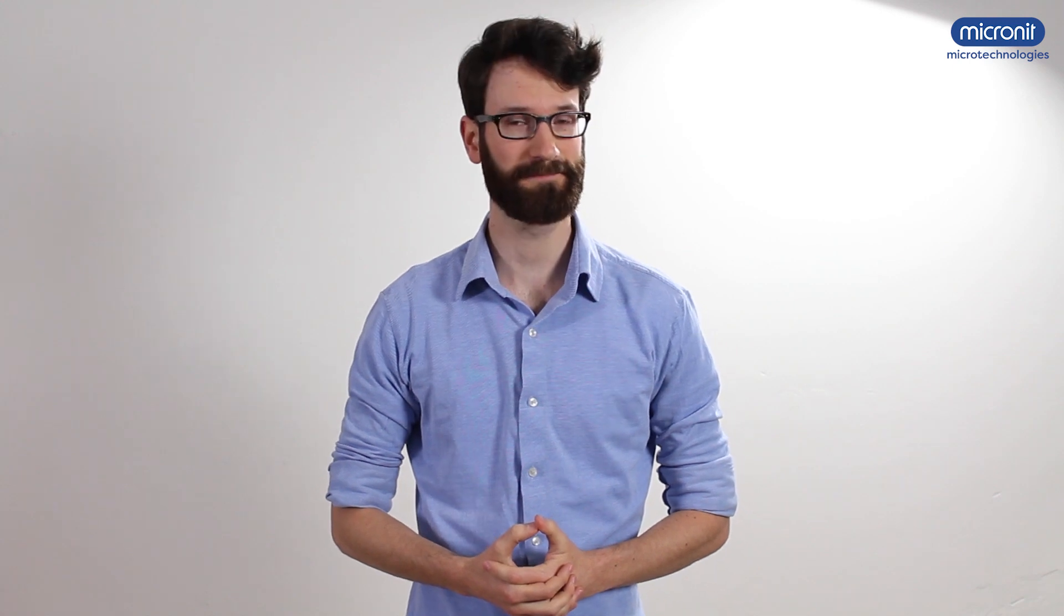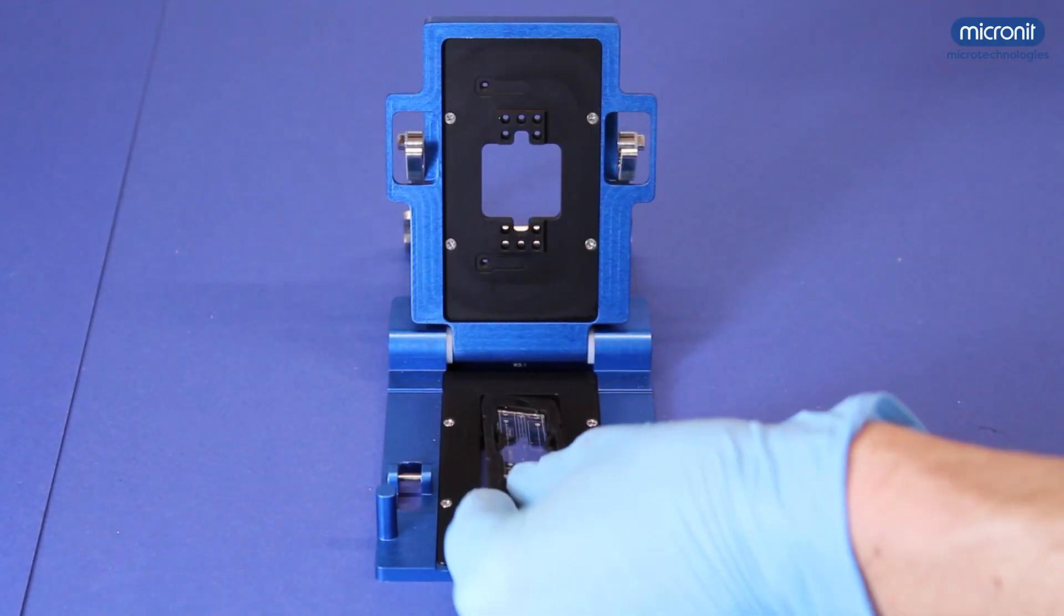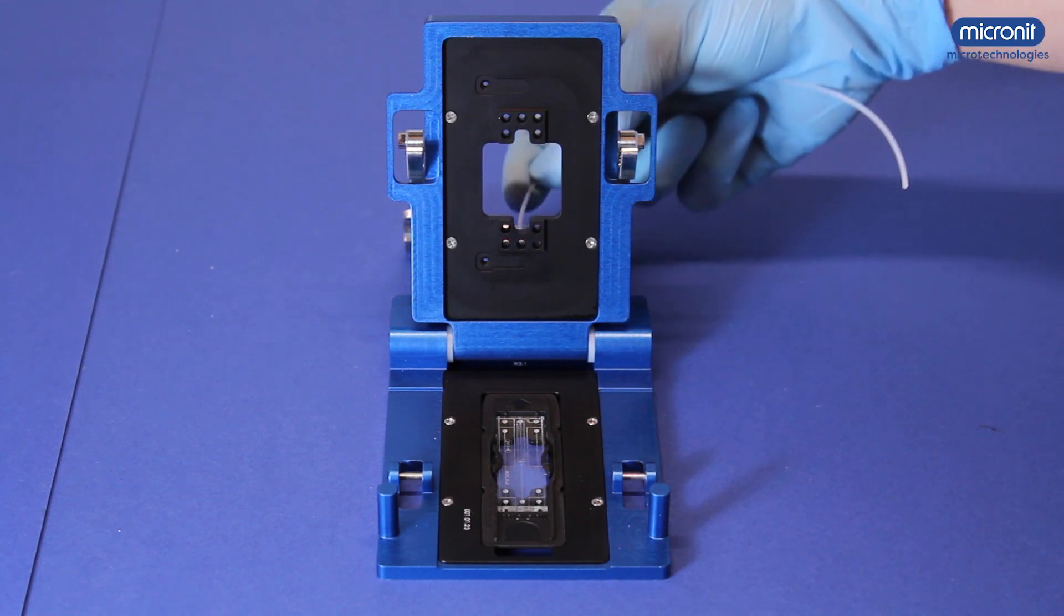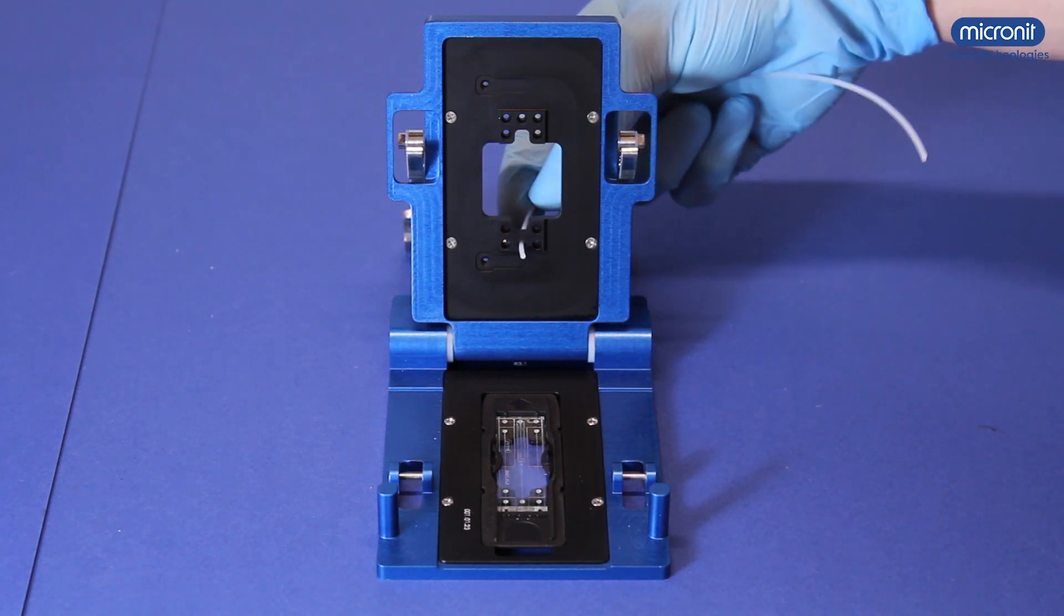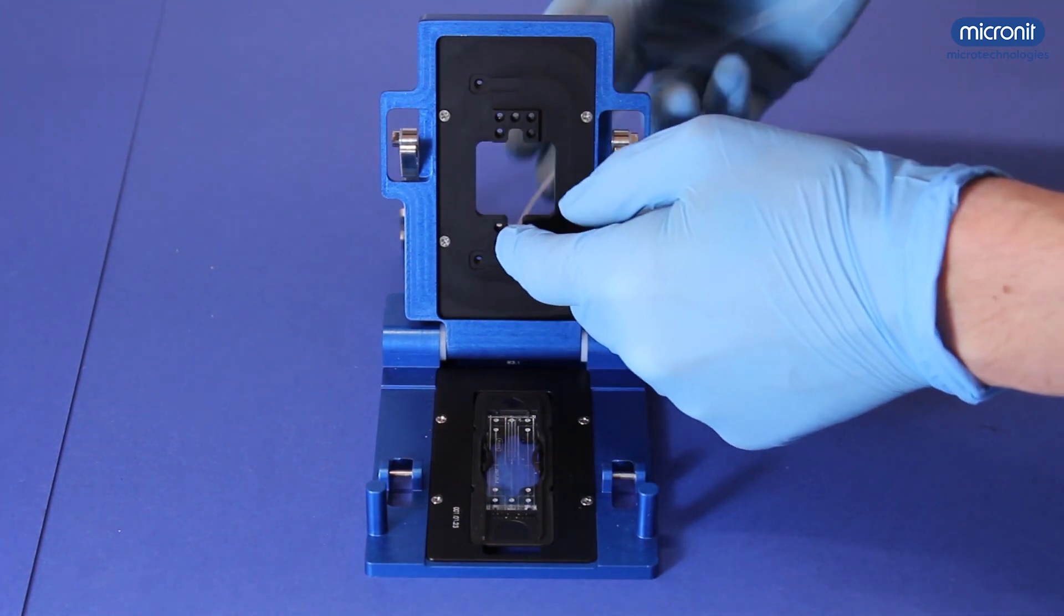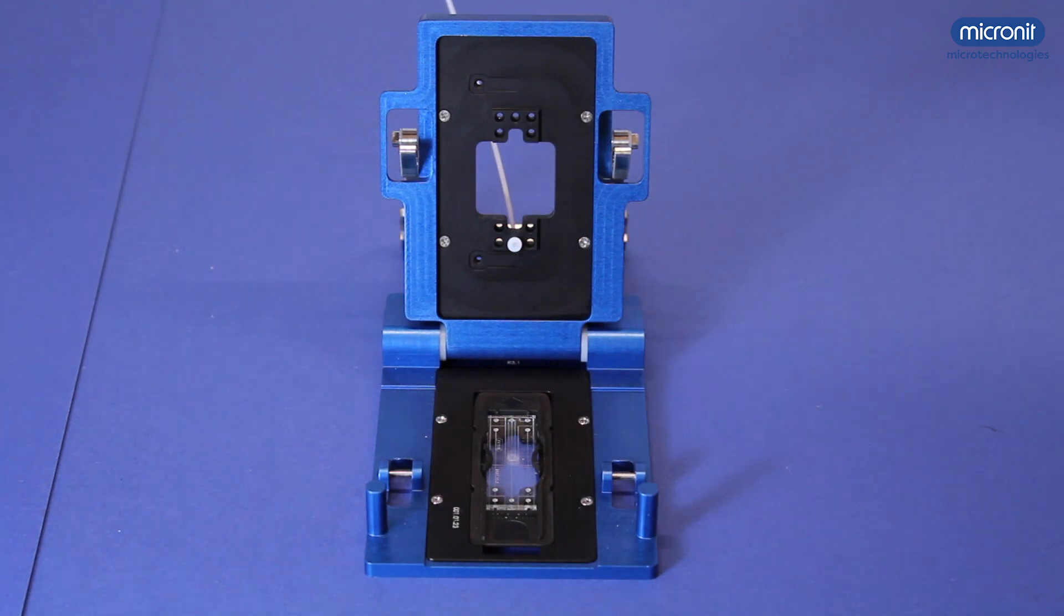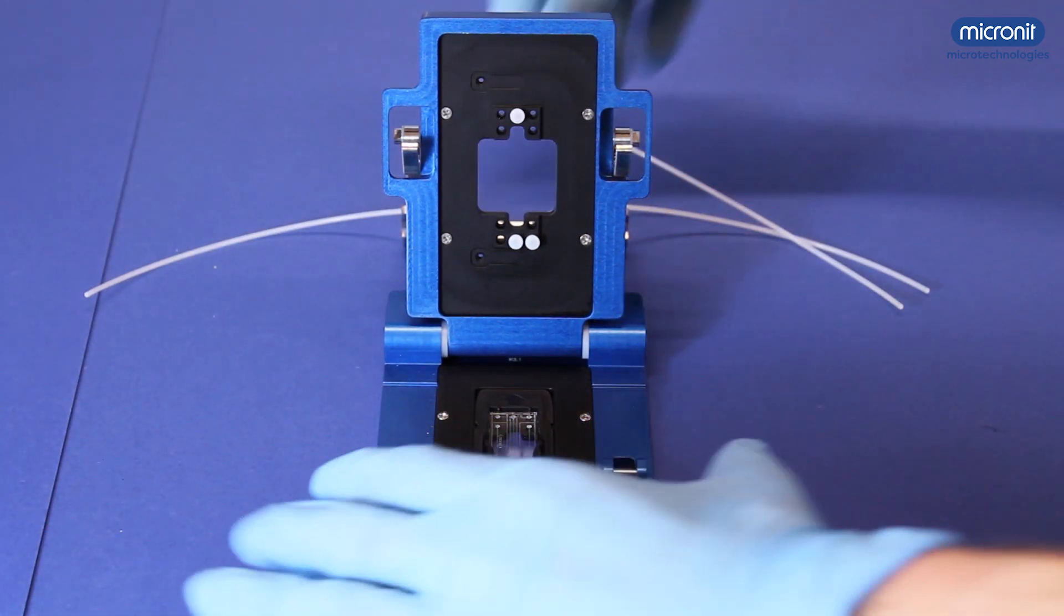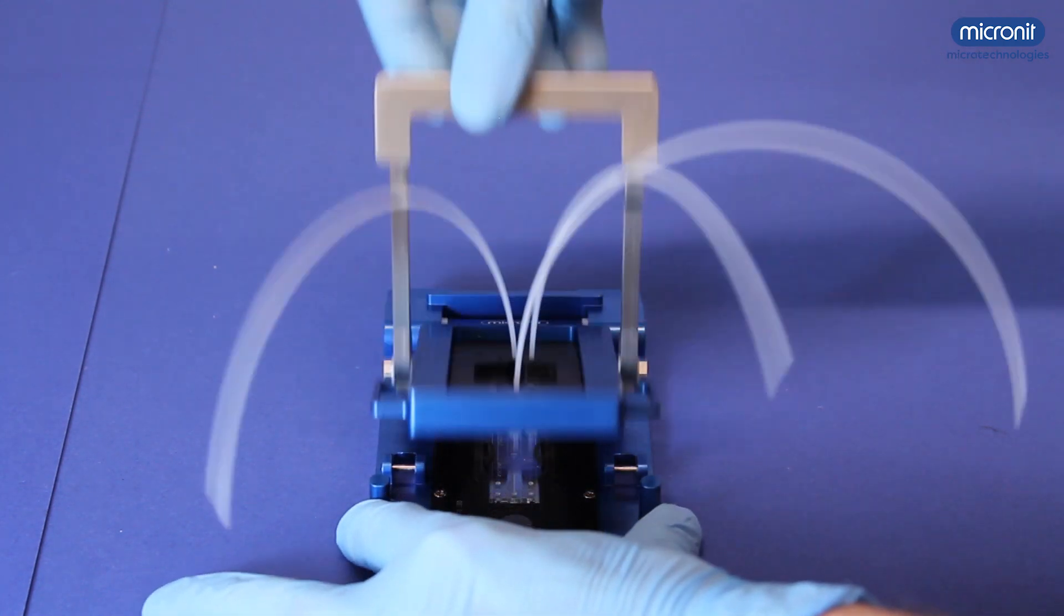There are many different kinds of droplet generators. Make sure you check which holes should be connected for your specific chip. Now place the chip in the chip holder and connect the tubing to the right holes. Place a ferrule on the tubing. Close the chip holder and the tubing is sealed to the chip.